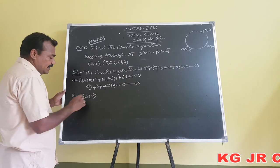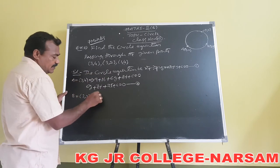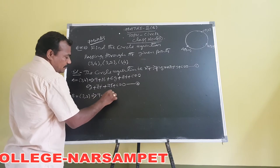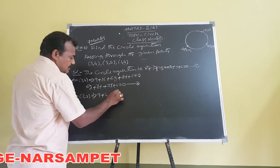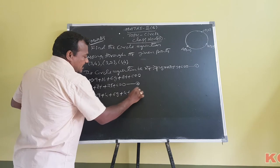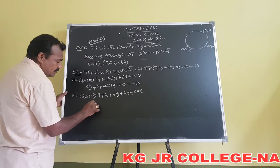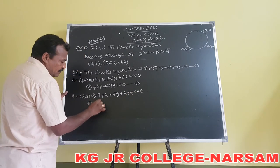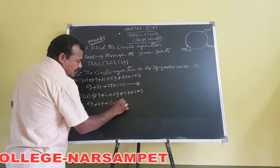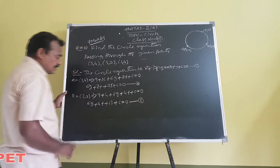Substituting point B = (3,2) in the circle equation: x=3 gives 9 + 4 + 6g + 4f + c = 0. Writing this: 6g + 4f + 13 + c = 0. This is the second equation.